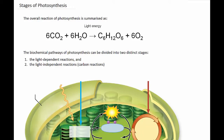Photosynthesis is the process in which plants utilize light energy and use it to break down water and carbon dioxide in order to build oxygen and glucose. This overall reaction is summarized as carbon dioxide, which they get from the atmosphere, and water, which is drawn up through the roots. Plants use light energy to then convert those reactants into glucose and oxygen.